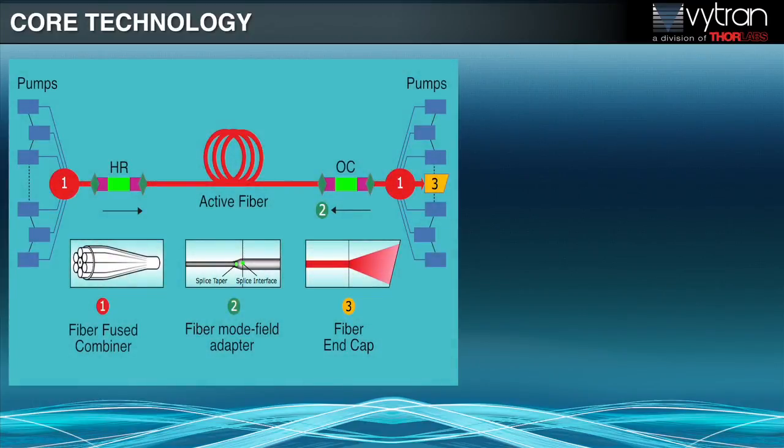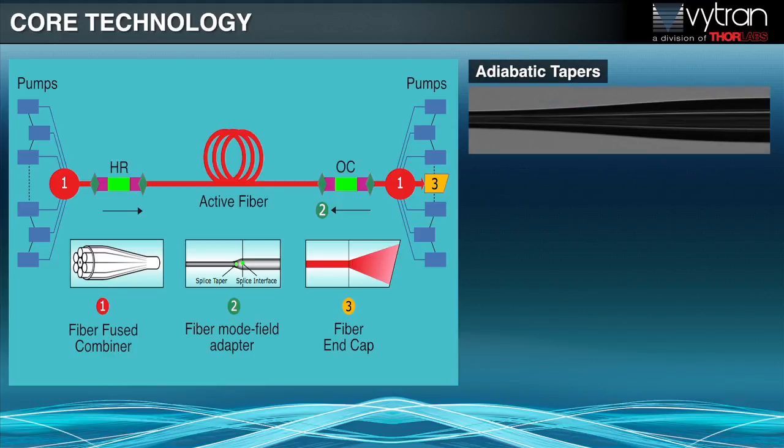The GPX3000 series is ideal for developing many types of fuse components and manufacturing them in volume. For fiber lasers, these components include adiabatic tapers with typical losses less than 0.01 dB for LP01 mode transmission.